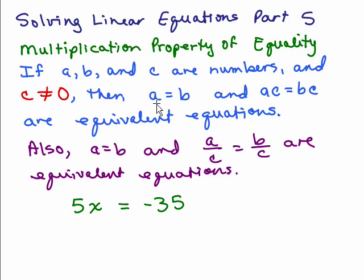then A equals B and AC equals BC are equivalent equations. What that says is if you have two things that are equal, you could multiply both sides of the equation by the same number as long as that number is not zero and get the same solutions.